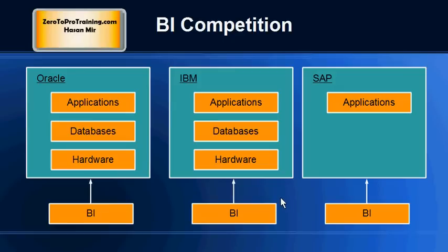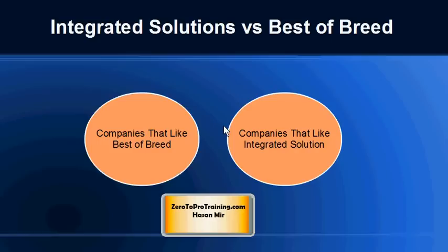Business intelligence technology was now added to the product portfolio of Oracle, IBM, and SAP. These three big companies would now compete in the business intelligence area as well. IBM and Oracle were already competing in databases and hardware, and SAP and Oracle were competing mainly in the ERP world, but now there is a new competition.